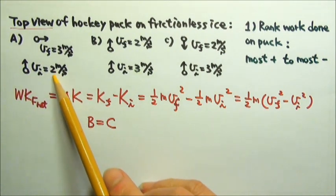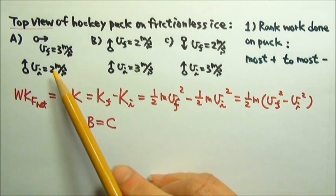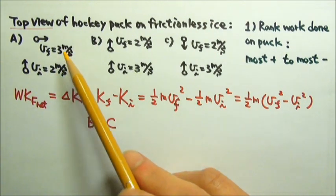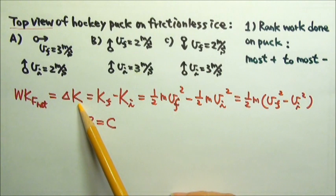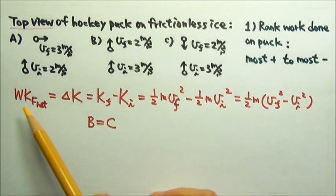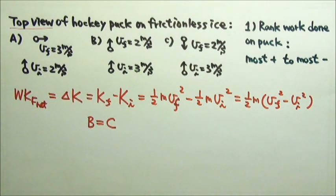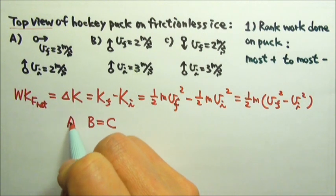For a, the speed increases, that means the kinetic energy increases. So for a, the delta K is positive. The work done is positive, so a ranks first.